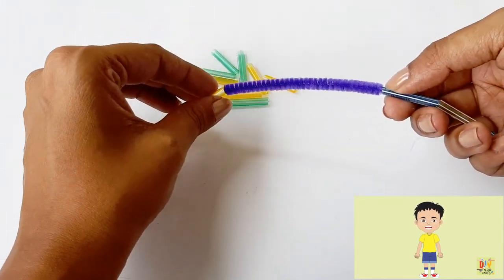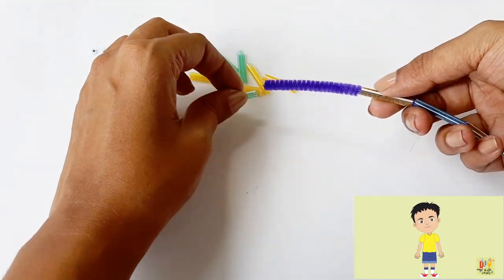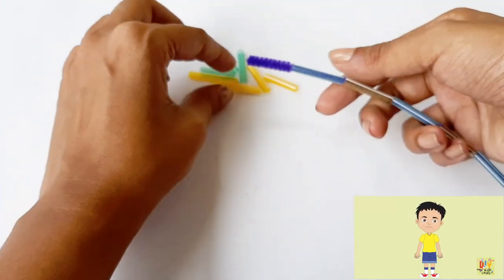After placing all the straws on our fuzzy wire, we can now make the head of our snake.